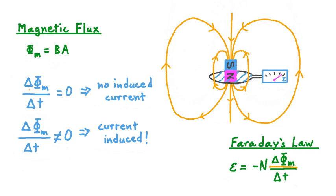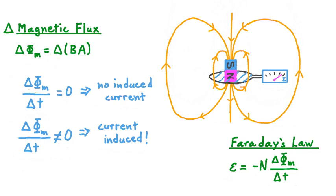To better understand this equation, let's consider delta phi sub m. We've seen that when delta phi sub m is zero, that means no EMF and therefore no current is induced, and that when it's non-zero, some current is induced and therefore so is EMF. In order for delta phi sub m to not be zero, there needs to be either some change in the magnetic field, or some change in the area that field is passing through, or a change in both.